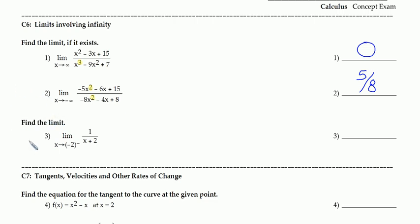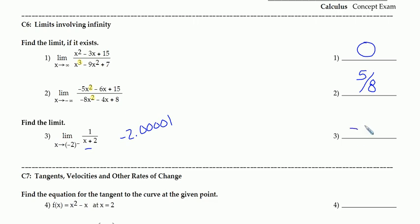This third one on concept 6: the limit is going to negative 2 from the left, so I need to think of a number left of negative 2 — that'd be like negative 2.00001. If I take negative 2.001 and add it to 2, I'm going to get a very small negative number. 1 divided by a small negative number will be a very large negative number, so this is going to head towards negative infinity. That is concept 6.